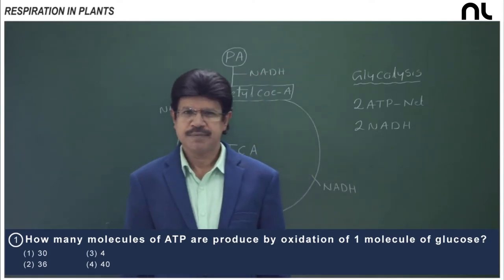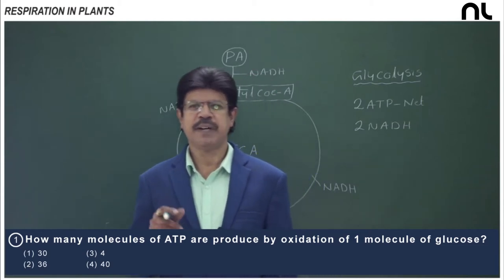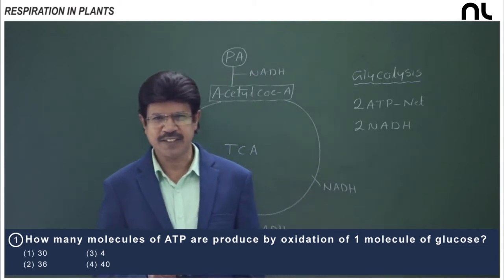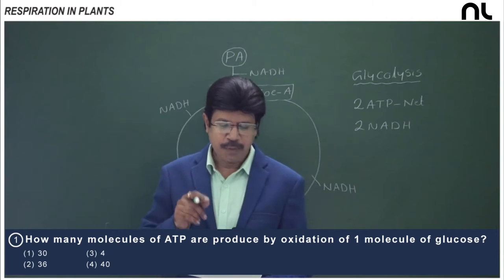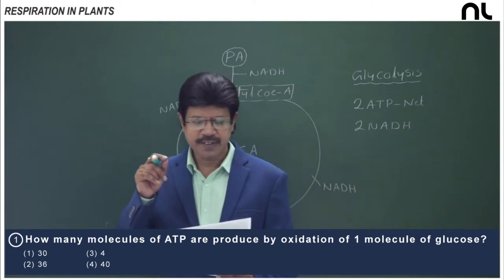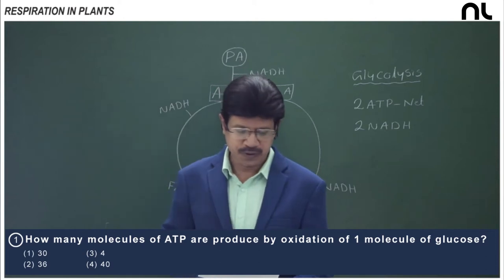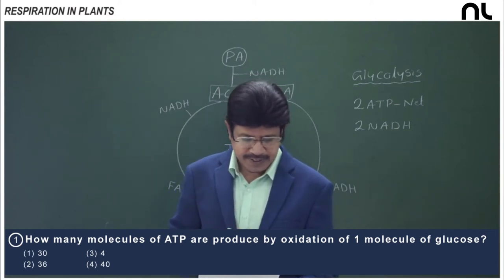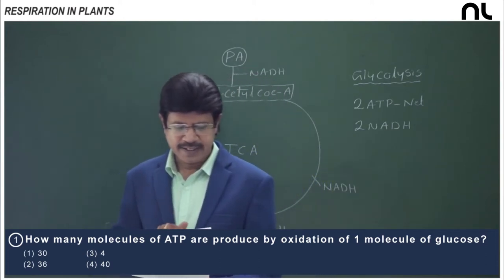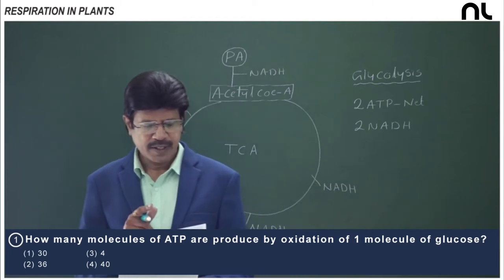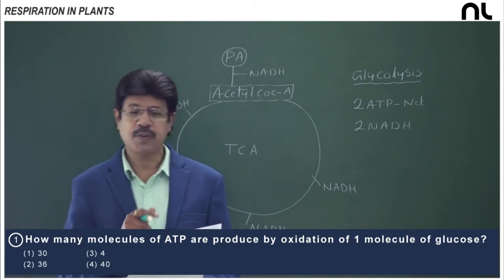Welcome to NEAT login. The interlinked conceptual question in plant physiology — specifically plant respiration — is: how many molecules of ATP are produced by oxidation of one molecule of glucose? The options are: 30 ATP, 36 ATP, 4 ATP, and 40 ATP.